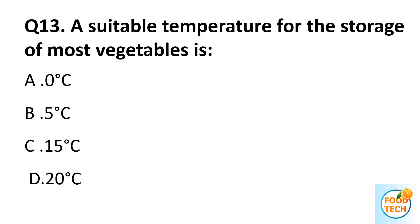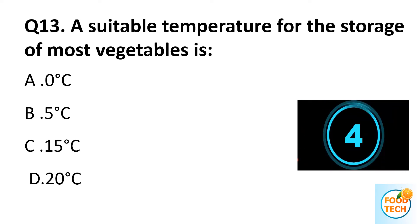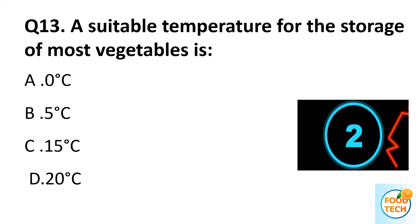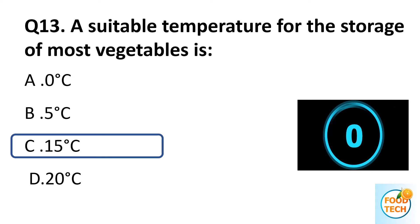Question 13. A suitable temperature for the storage of most vegetables is: A. 0 degrees Celsius. B. 5 degrees Celsius. C. 15 degrees Celsius. D. 20 degrees Celsius. Answer C. 15 degrees Celsius.